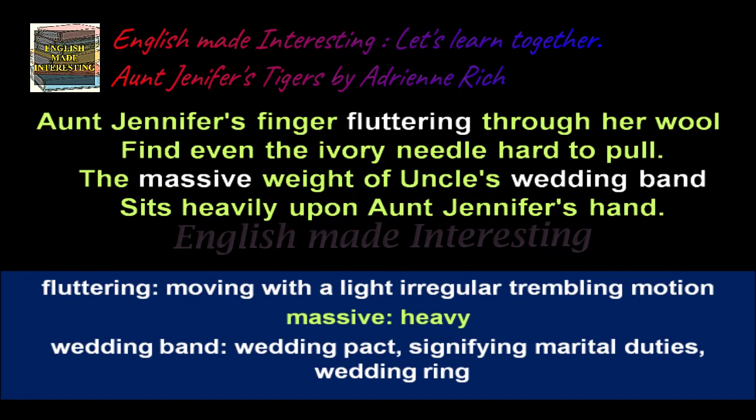In the second stanza, Aunt Jennifer appears to be creating beautiful images of the tigers by using wool. But she finds it quite hard to pull even the ivory needle. She is so terrorized and tortured that she is unable to carry the weight of the wool. Her fingers flutter. The uncle's wedding band seems heavy on her hand, suggesting that she feels burdened with her marital responsibilities.